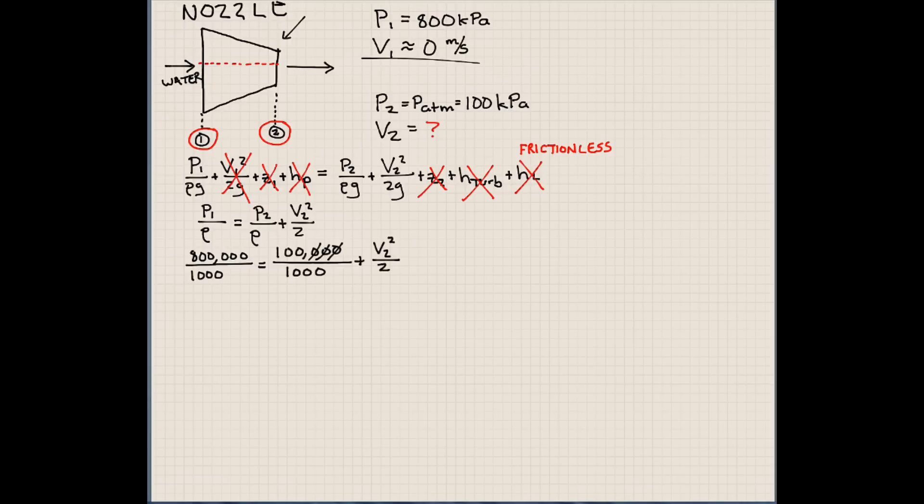And we can solve this equation. Let's see. What does this come out to be? 2 times 700. So V2 is equal to the square root of 1,400. Or V2 is 37.4 meters per second. All right? So this is the velocity we could expect coming out of that nozzle.